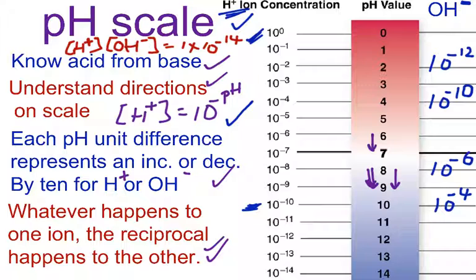Because they always have to add up to 14. If you know your H+ concentration is 10 to the negative 13, you can automatically assume that your OH- concentration would be 10 to the negative 1. Once again, I add up to 14, negative 14, and you're good to go.